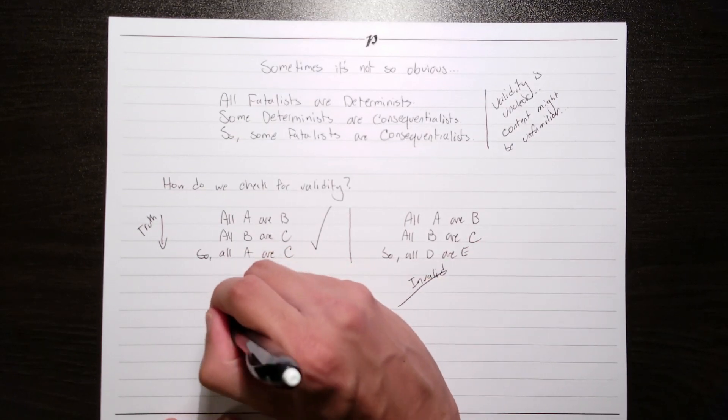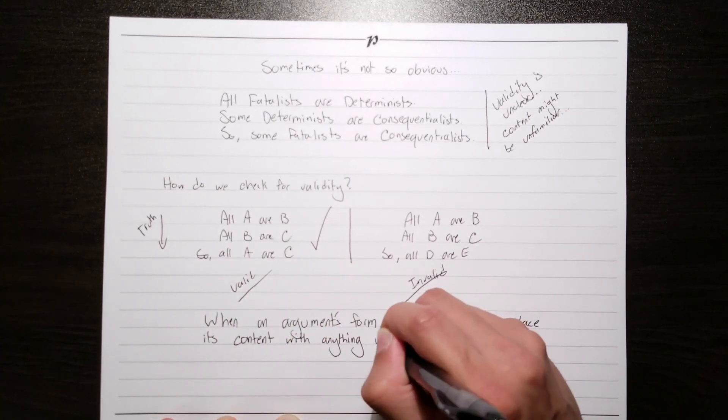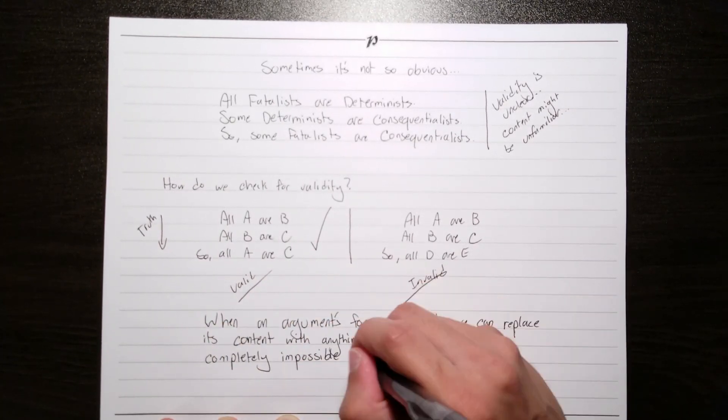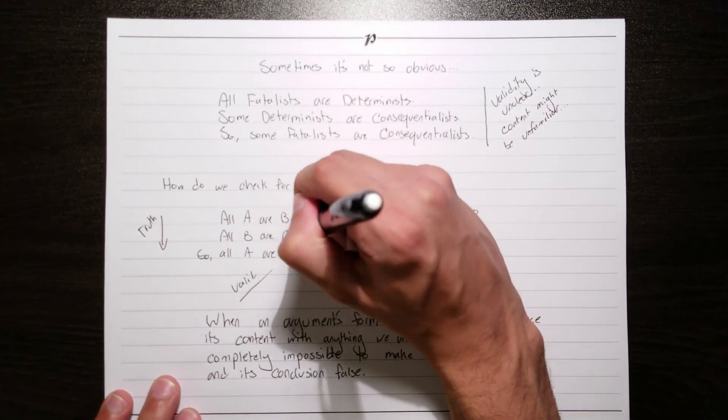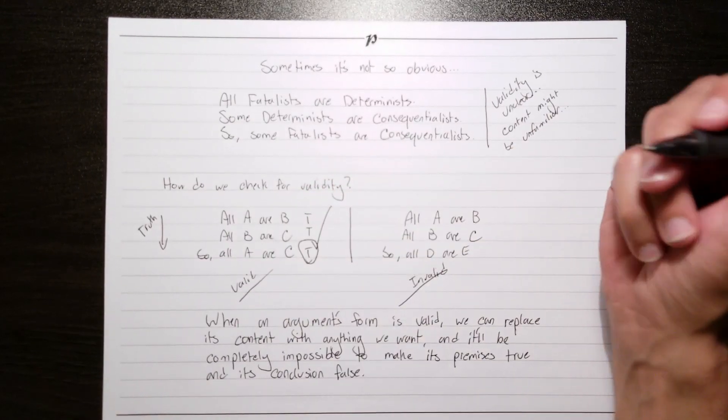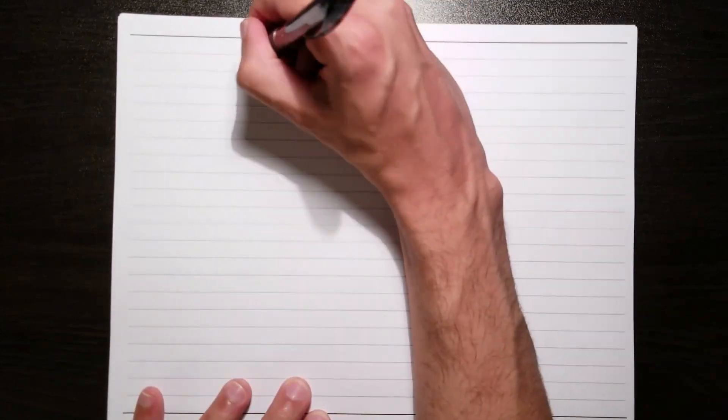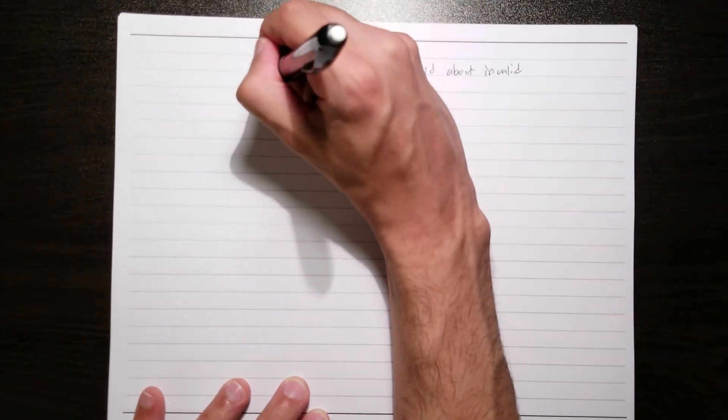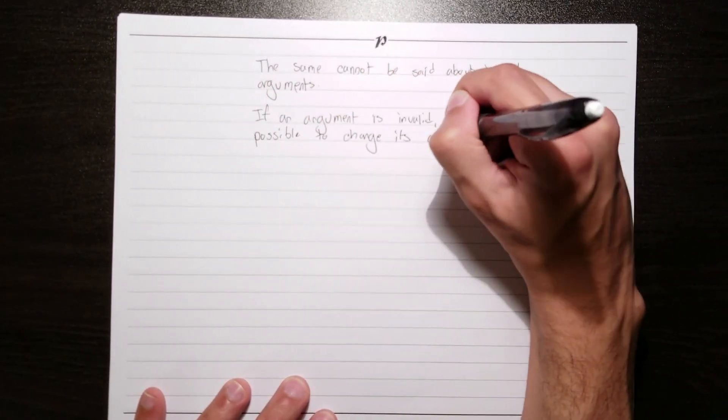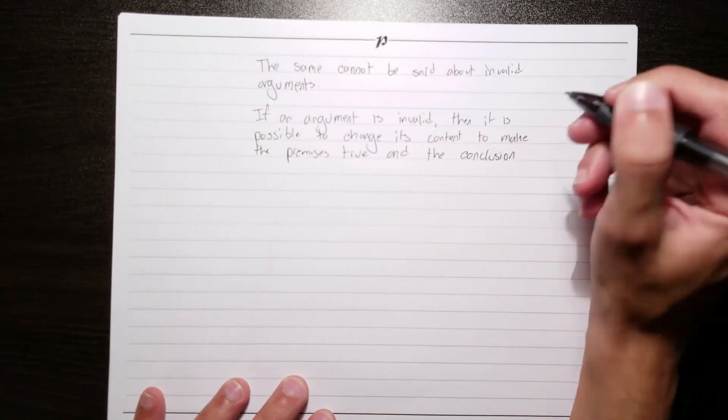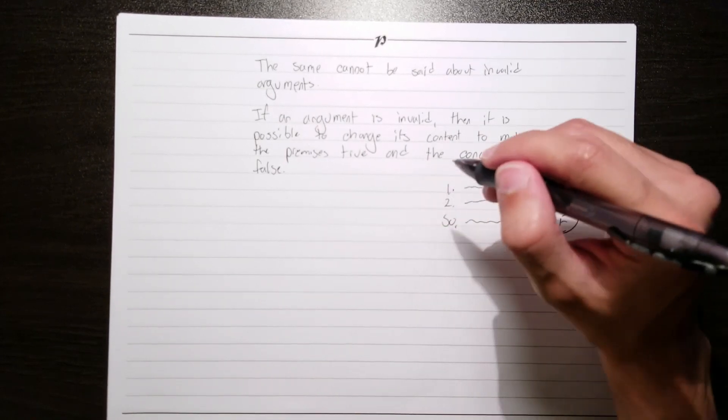Now, here's the important part. When an argument's form is valid, we can replace its content with anything we want, and it'll be completely impossible to make the premises true and the conclusion false. The second that we make the premises of a valid form true, the conclusion will come out true every single time. And we can replace A, B, and C with anything we want. The same cannot be said about invalid arguments. If an argument is invalid, then it is possible to change its content so as to make the premises true and the conclusion false. It's this key difference between valid and invalid arguments that counterexamples allow us to exploit.